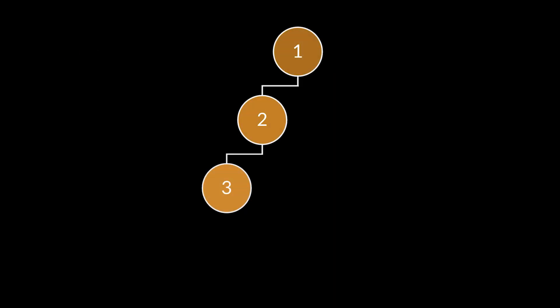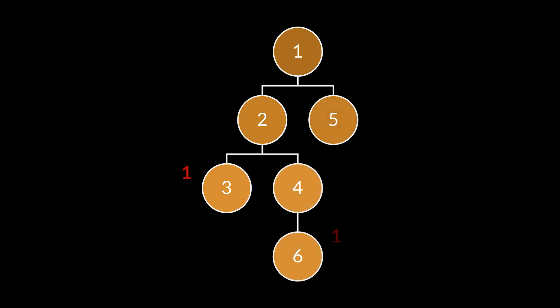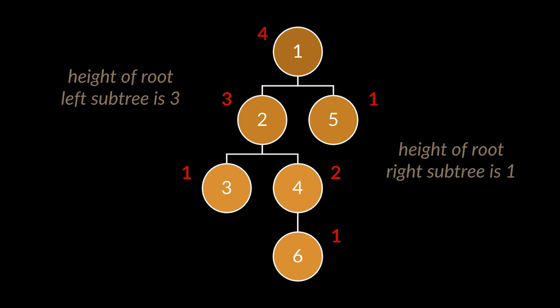The height of the null nodes is usually set to zero. Therefore, the node above it has a height of one, the one above it a height of two, and so on. To retrieve the height of a node with two children, we compare the heights of its left and right children, retrieve the maximum between them, and add one to it.